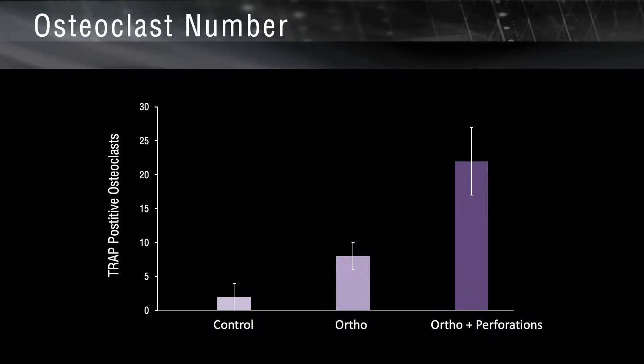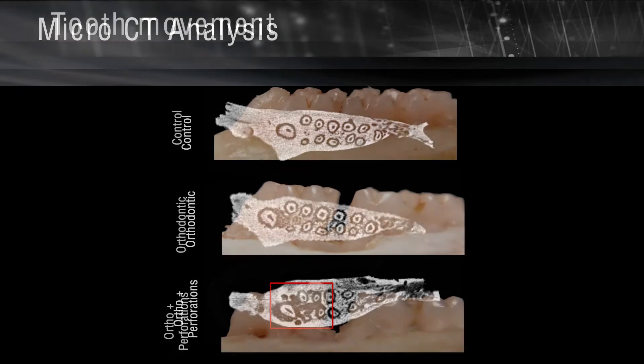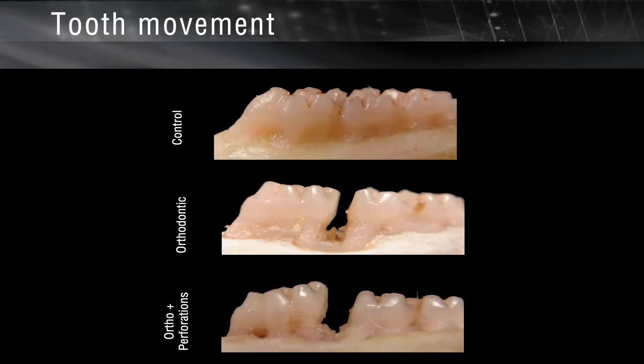The increase in the number of osteoclasts was accompanied by a decrease in bone density around the tooth that was the target of orthodontic forces, and in response to that, the rate of tooth movement was higher. This demonstrates that as long as we have inflammatory markers in the area — whether coming from the PDL or from the bone — we can recruit osteoclasts, bone density goes down, and the rate of tooth movement can increase.